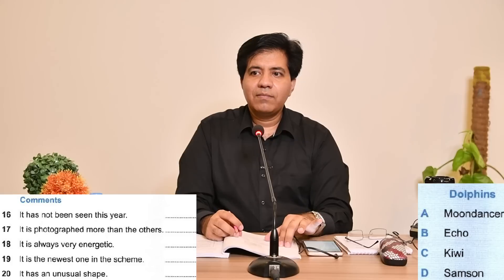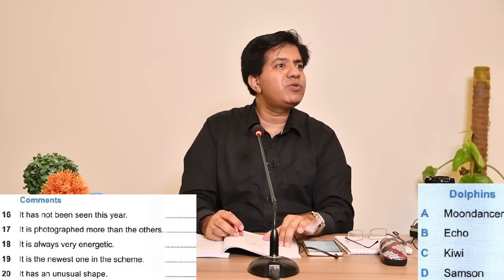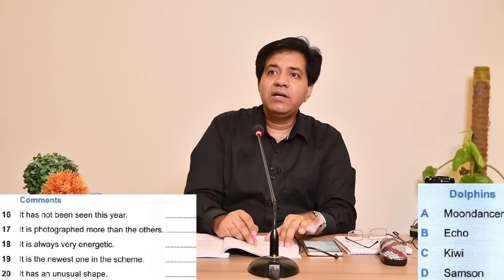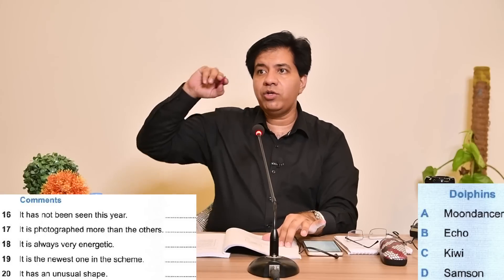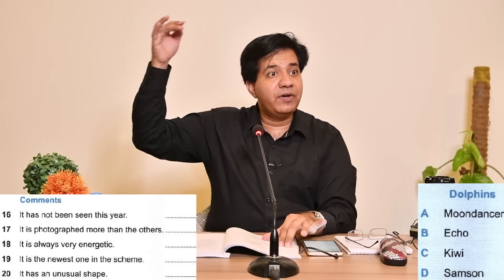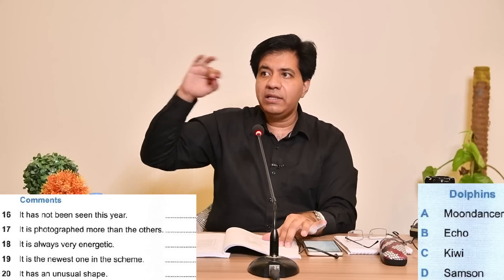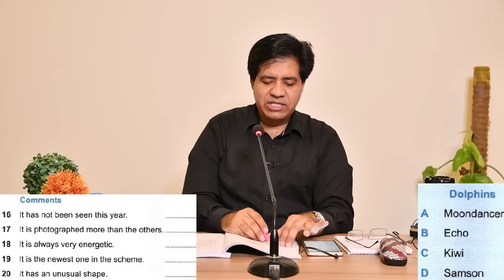Unfortunately, Echo is being rather elusive this year and hasn't yet been sighted by our observers, but we remain optimistic that he'll be out there soon. Echo has not been sighted — elusive and not been sighted this year. So Echo is B. On your answer sheet you will write B. Never write the word, especially when they label it A, B, C, D — always write the letter.